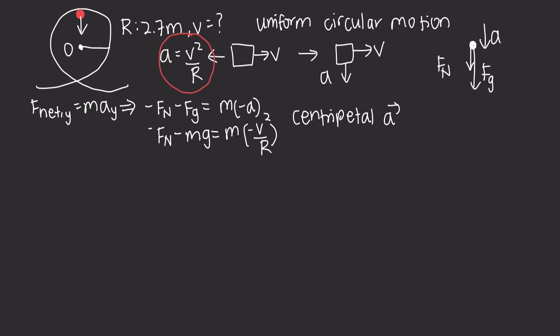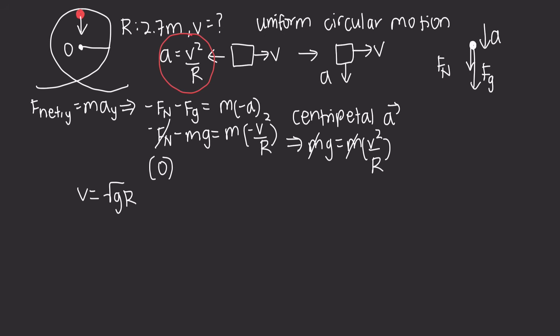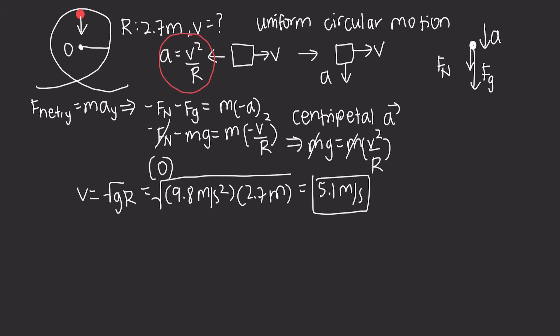If we want the ball to have the least speed to remain in contact, it is on the verge of losing contact with the loop, which means the normal force equals zero. Substituting zero for F_N, we get mg equals m times v squared over r. The masses cancel, giving v equals the square root of g times r, which is the square root of 9.8 meters per second squared times 2.7 meters, equaling 5.1 meters per second.